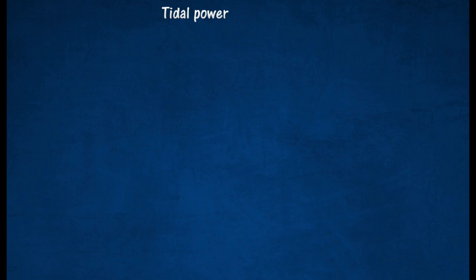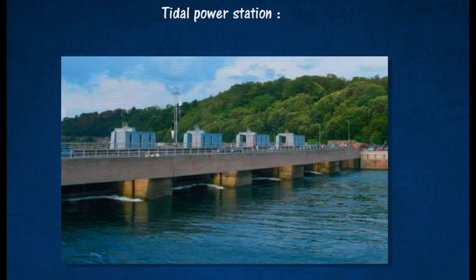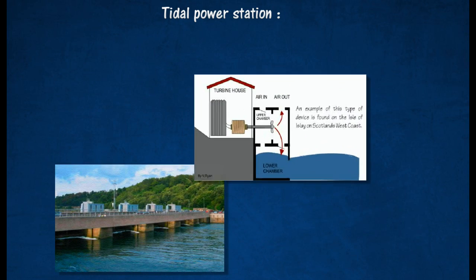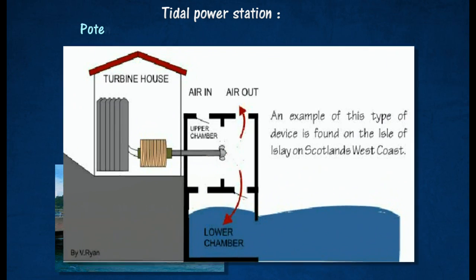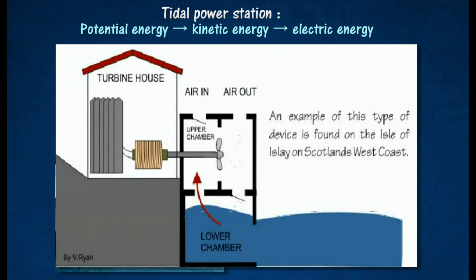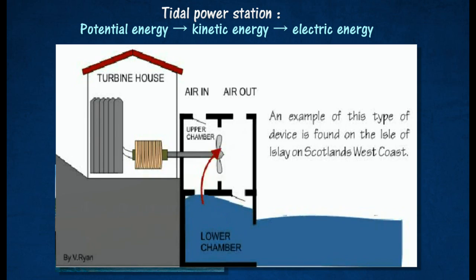In a tidal power station, a dam or barrage is built across a river mouth or inlet. The flow of water through turbines in the dam as the tide rises and falls can be used to drive generators to produce electricity.